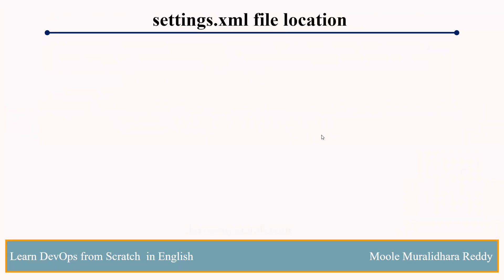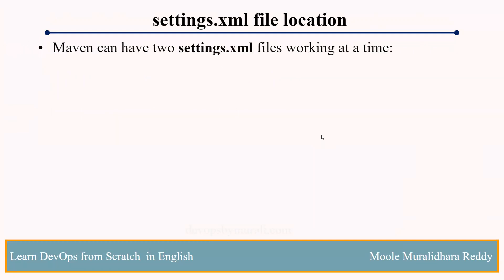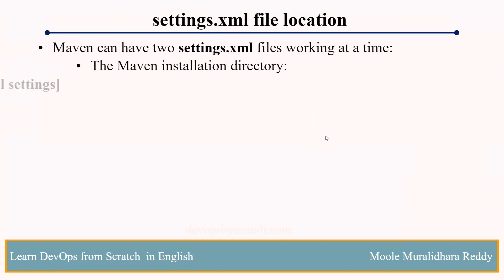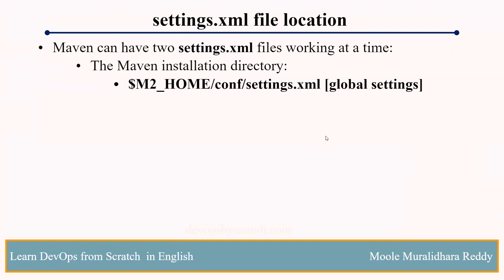Coming to the settings.xml file, we have two locations. One is when we install Maven, we have a different location — inside the opt/maven directory, we have a config directory. Inside the config directory, settings.xml is there. That is the global setting.